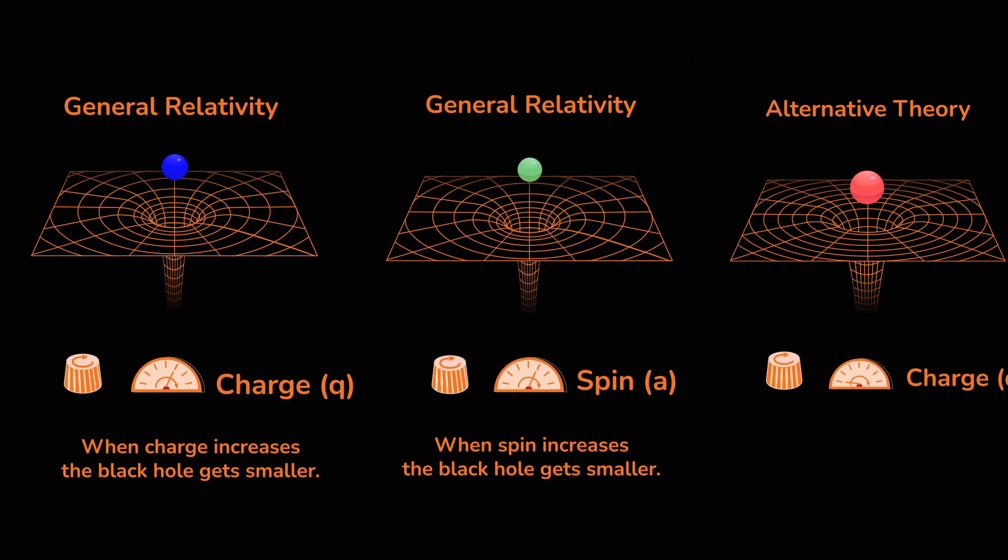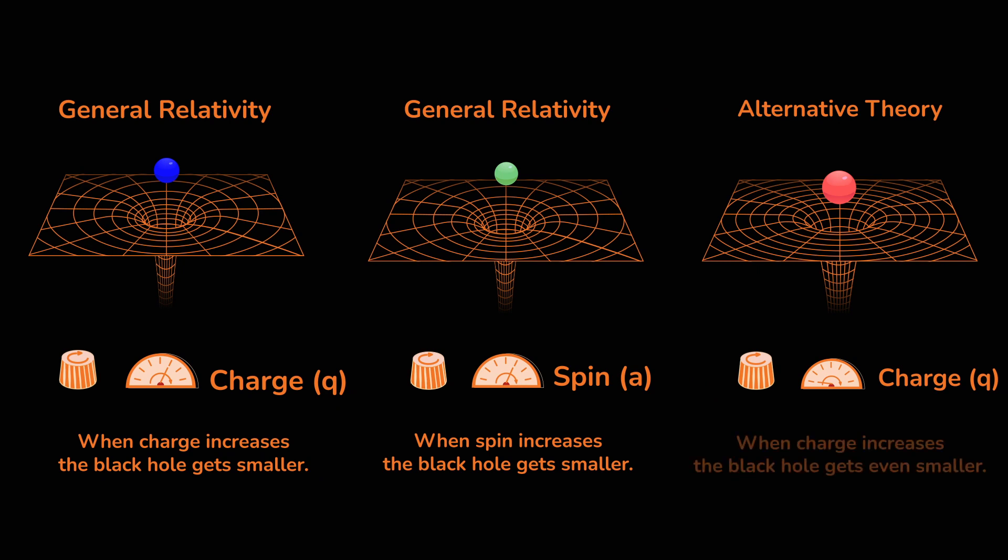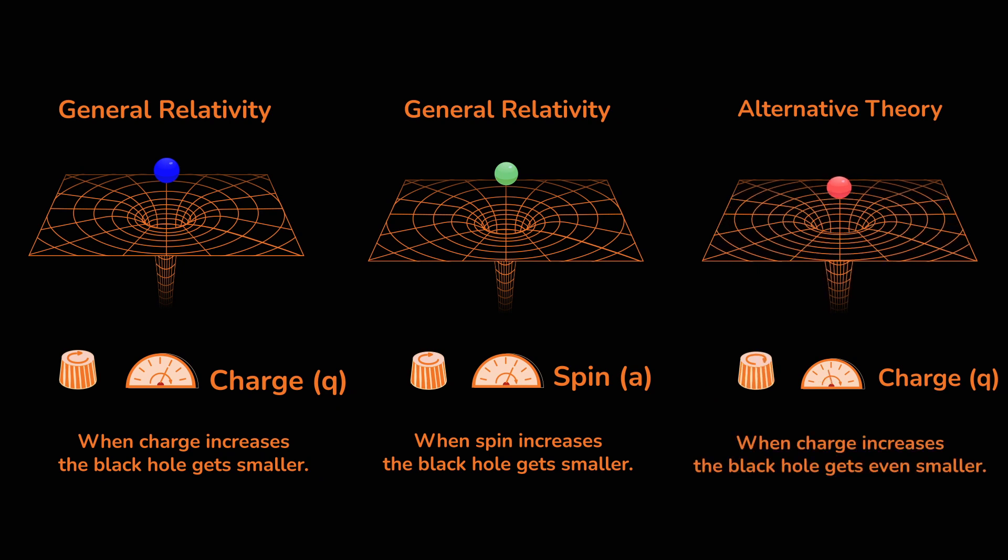Alternative theories of gravity also predict black holes. These can be smaller or larger than the black holes of general relativity.